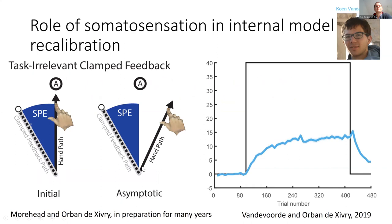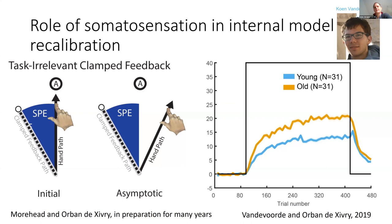What happens is that with training, people start to drift away from the target. This is represented on this graph — trial number on the x-axis, hand angle on the y-axis. A group of young people, on average, drift around 15 degrees after 400 trials. What was interesting is that when Kuhn ran this experiment with older people, this implicit adaptation — this drift of the hand driven by the cursor deviation — was larger in older people than in young people.